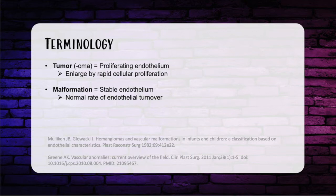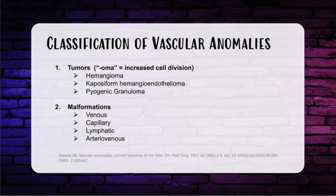For tumors — lesions ending with the suffix -oma — they encompass any lesion with a proliferating endothelium, enlarging by rapid cellular proliferation. Malformations, by contrast, have a stable endothelium and normal rate of endothelial turnover. Under the tumor category: hemangioma, kaposiform hemangioendothelioma, and pyogenic granuloma. For malformations: venous, capillary, lymphatic, and arteriovenous (AV) malformations. AVMs are high-flow lesions, while the other three are considered low-flow.